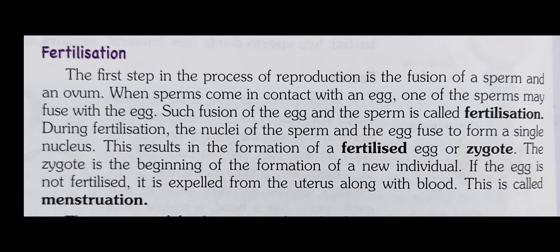Next is fertilization. The first step in the process of reproduction is the fusion of sperm and the egg. When sperm come in contact with an egg, one of the sperms may fuse with the egg. Such fusion of the egg and the sperm is called fertilization. During fertilization, the nuclei of the sperm and the egg fuse to form a single nucleus. This results in the formation of a fertilized egg, or zygote. The zygote is the beginning of the formation of a new individual.